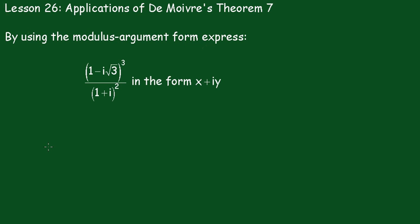Lesson 26. Applications of De Moivre's Theorem number 7. By using the modulus argument form express (1 minus i root 3)³ divided by (1 plus i)² in the form x plus iy. Now what I'll do here,